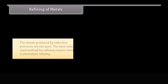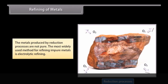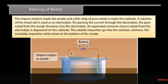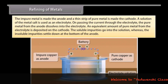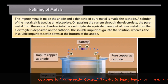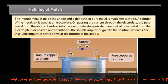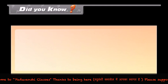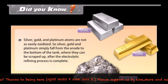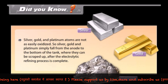Refining of metals: the metals produced by reduction processes are not pure and still contain impurities. The most widely used method for refining impure metals is electrolytic refining. The impure metal is made the anode and a thin strip of pure metal is made the cathode. A solution of the metal salt is used as the electrolyte. On passing current through the electrolyte, pure metal from the anode dissolves into the electrolyte. An equivalent amount of pure metal is deposited on the cathode. Soluble impurities go into solution, whereas insoluble impurities settle at the bottom of the anode, known as anode mud. Did you know? Silver, gold, and platinum atoms are not easily oxidized, so they simply fall from the anode to the bottom of the tank where they can be scraped up after the electrolytic refining process is complete.